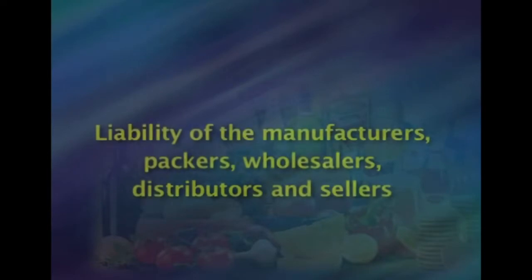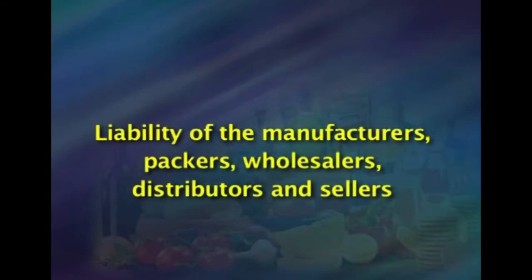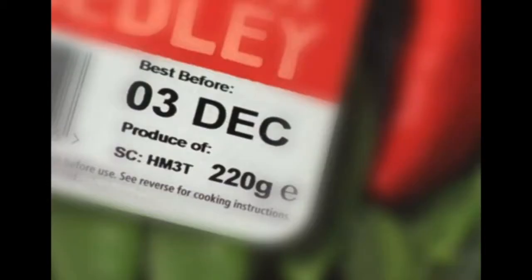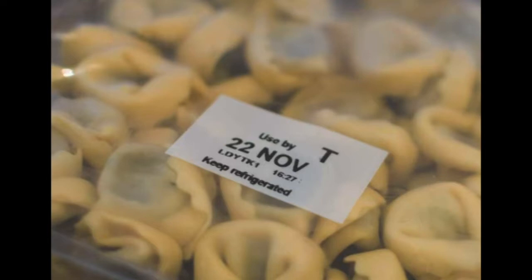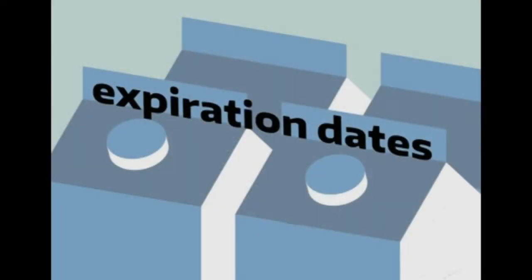Regarding liability of manufacturers, packers, wholesalers, distributors, and sellers: a wholesaler or distributor will be liable under this act for any article of food supplied after the date of its expiry, stored or supplied in violation of the safety instructions of the manufacturer, or unsafe, misbranded, or of unidentifiable manufacturer. The seller will be liable for any article of food which is sold after the date of its expiry or handled or kept in unhygienic conditions.